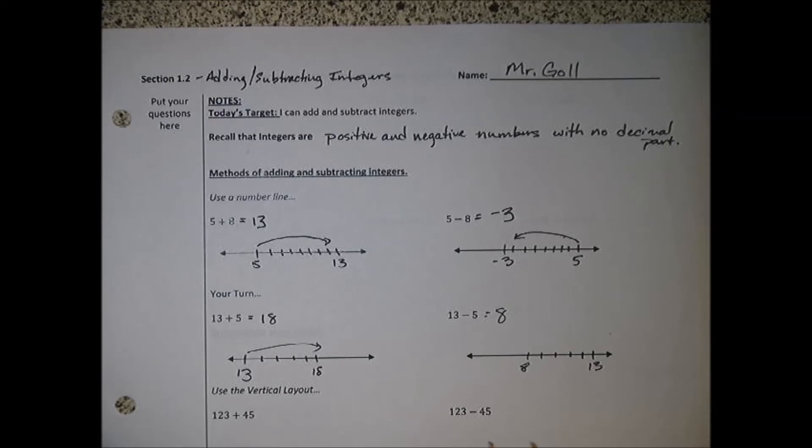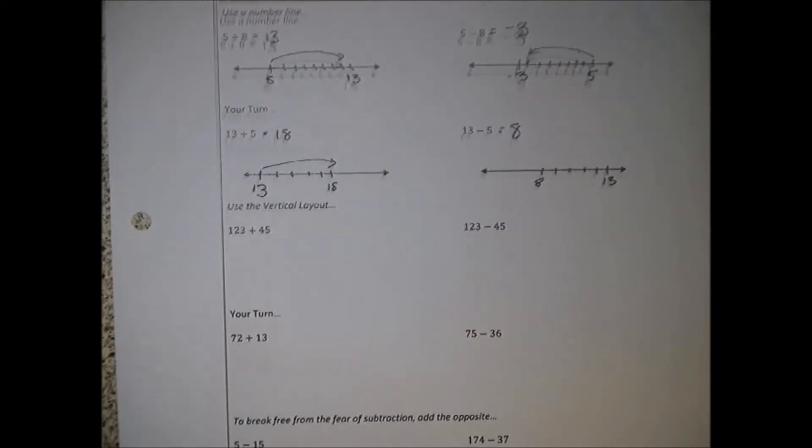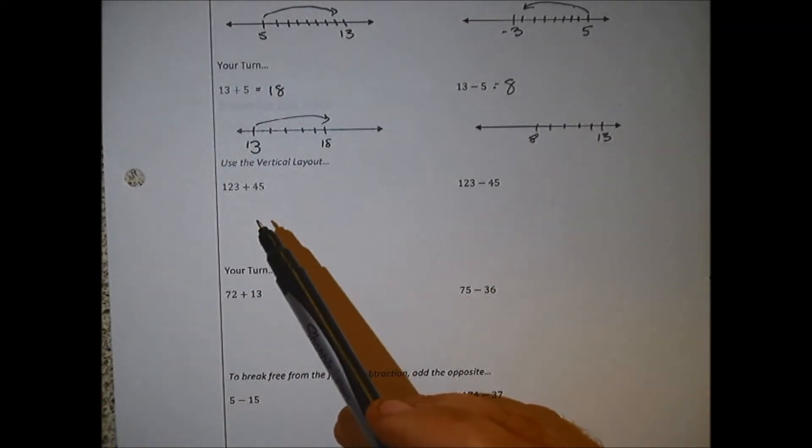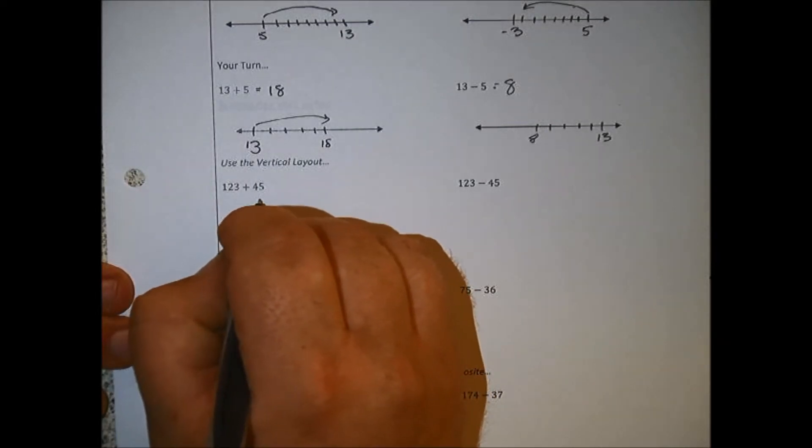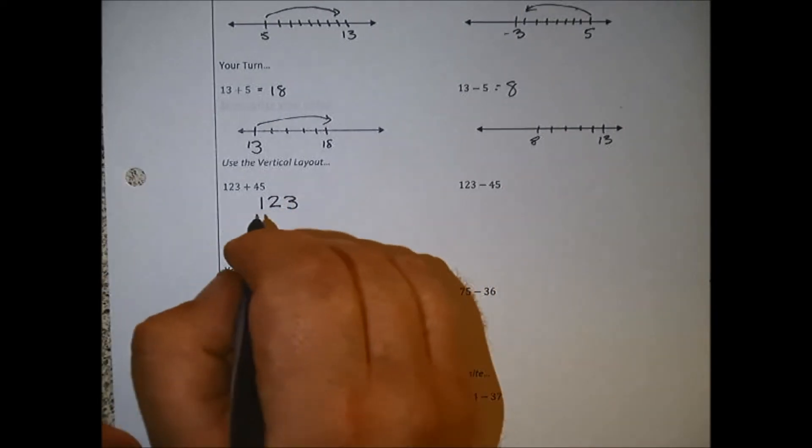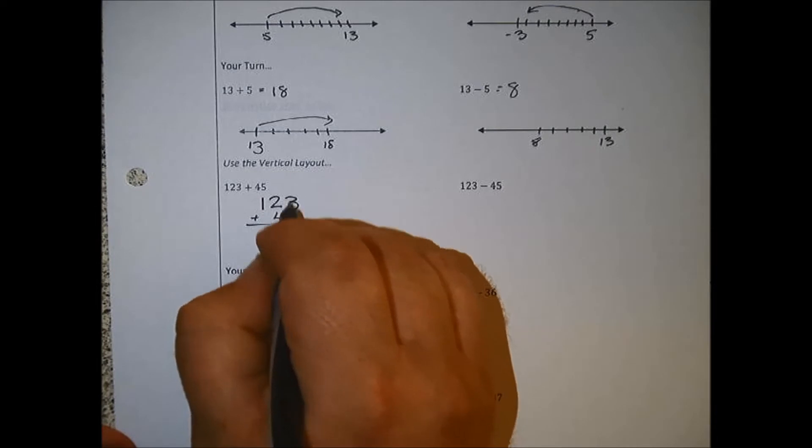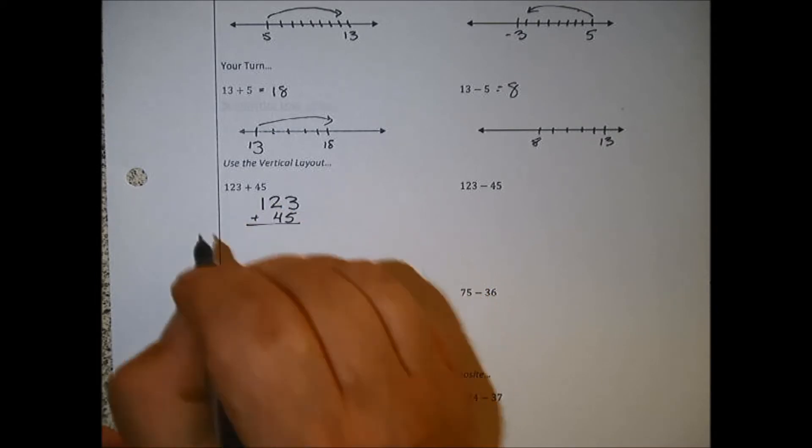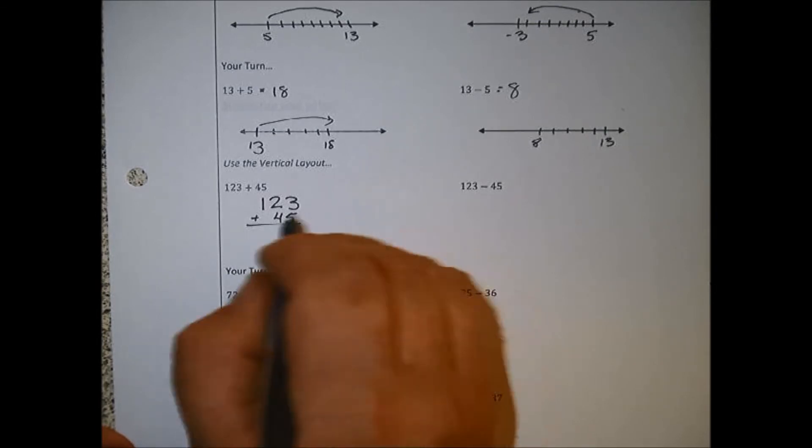Using a number line is good when we're dealing with numbers and we're not moving very far. I moved 8 one way or another here, I moved 5 one way or another. But that doesn't help me out very much when the numbers get to be a little bit bigger. Pretty hard to move right or left 45 spots. We're going to use a vertical layout here, probably the way you learned at one point. The vertical layout, we just stack the numbers, making sure the units are over units, ones are over ones, tens are over tens, hundreds over hundreds.